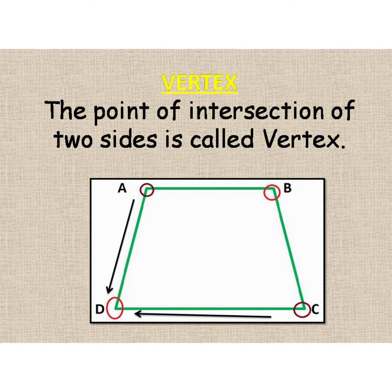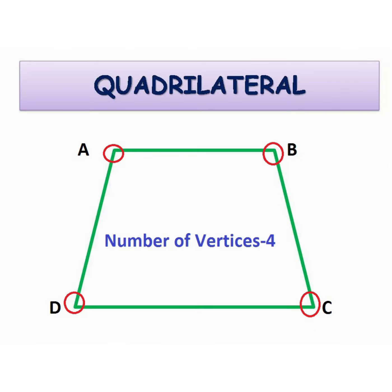The point of intersection of two sides is known as a vertex. Side AD intersects side DC at point D. So D is a vertex.